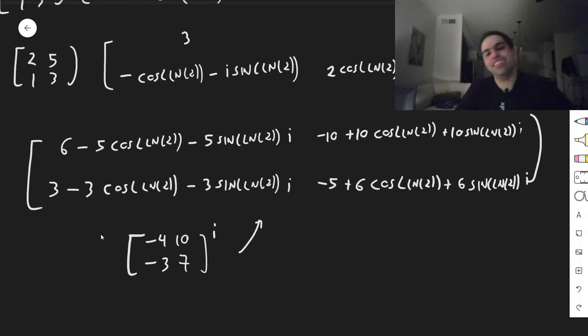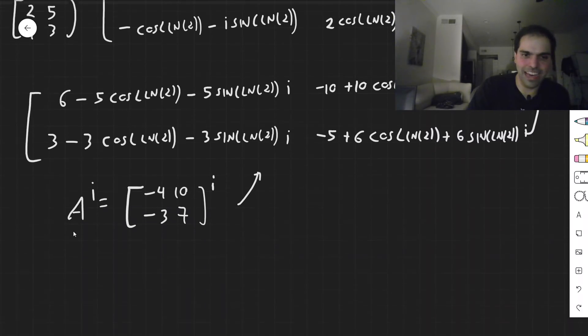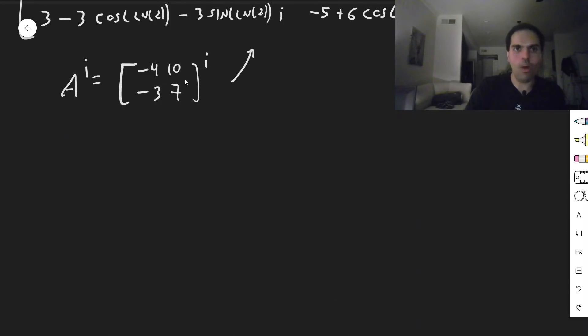Now, of course, this is a random formula who says I'm right or not, but I am right, because let me now give you an application. So what should A to the i satisfy? Well, what happens now if you take this to the i-th power?